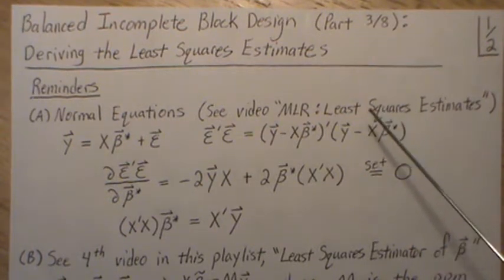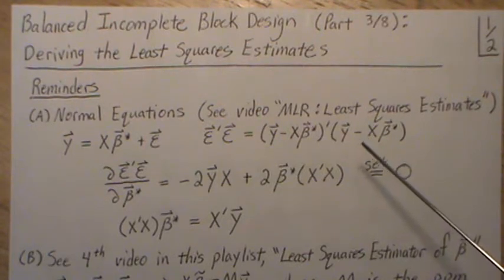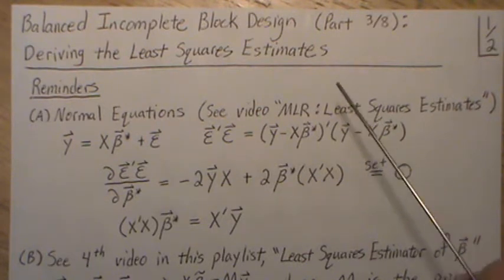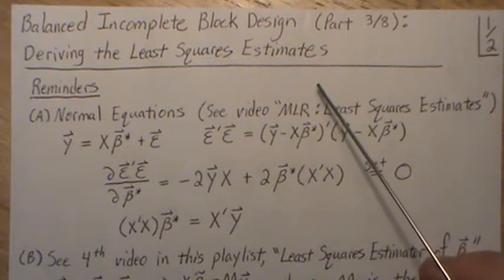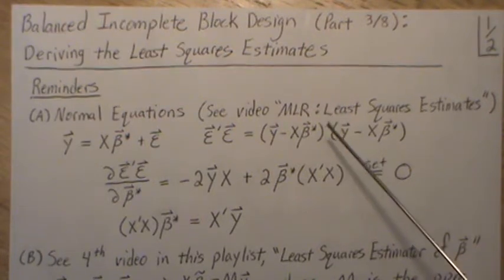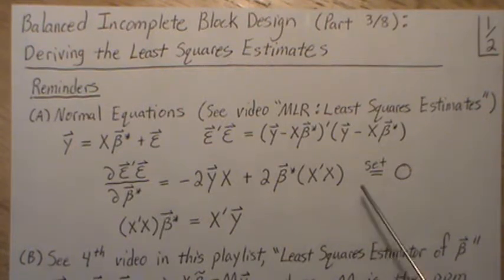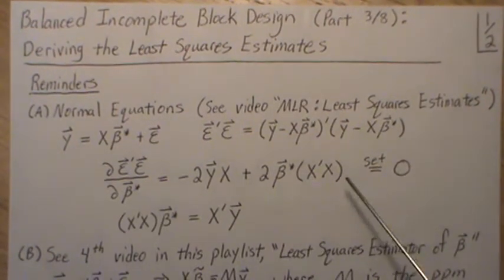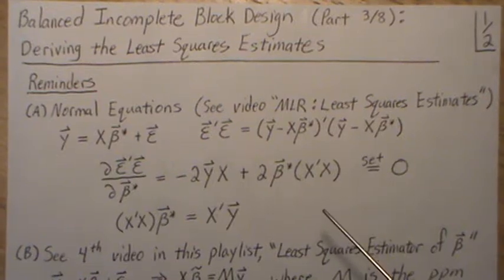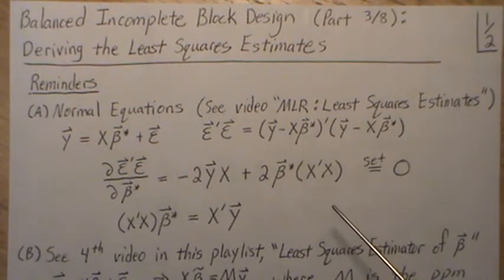This is part three of a little mini-series that I'm calling Balanced Incomplete Block Design, and we're going to derive the least squares estimates for the beta parameters. But before we start, I have to go through three reminders that we're going to reference but not prove in this video.